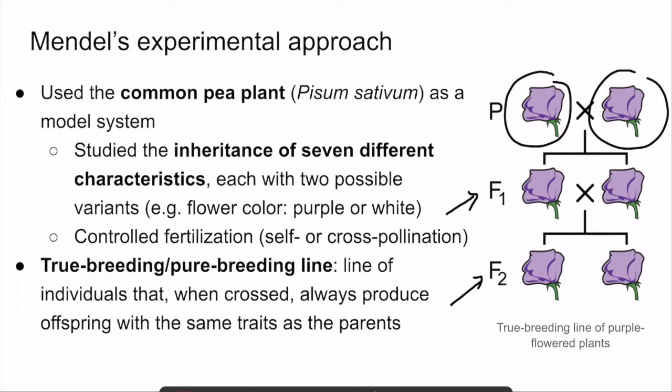I also want to point out these letters — P, F1, and F2 — which stand for different generations. P stands for the parental generation, the first generation of individuals that are mated. F1 stands for the first filial generation — these are the offspring that result from the cross of the parents. Subsequent generations are labeled F2, F3, F4, etc., resulting from subsequent crosses. For example, the F2 generation results from the F1 cross.